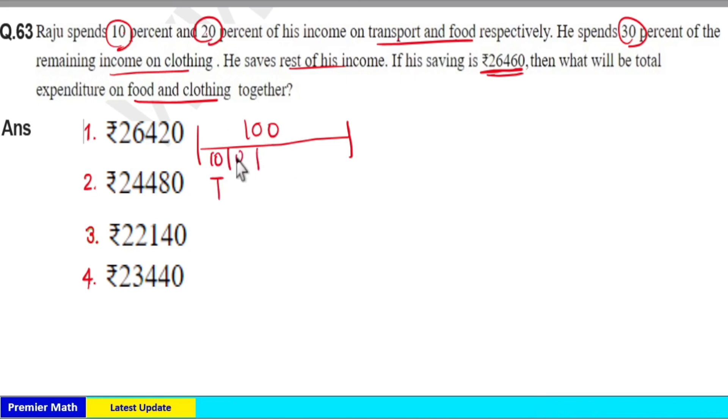20% of 100 is 20 rupees he spent on food. Remaining is 70% of 100 which is 70 rupees. Now out of the 70 rupees, 30% he spent on clothing. Here 30% of the remaining income, remaining income is 70.